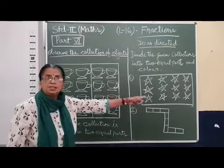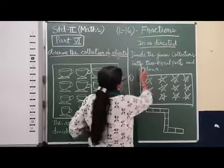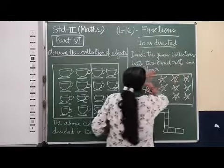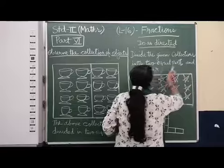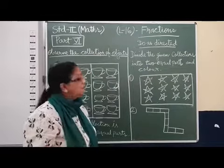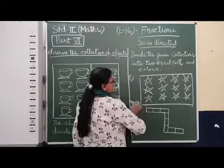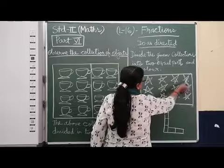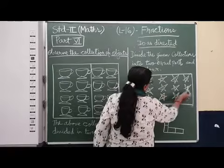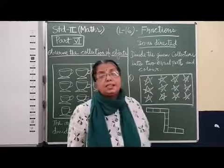Now we will do a certain exercise. What is given? Now we have to look at this directly. Divide the given collections into two equal parts and color. Now here we have to first count how many objects are given. You can see this box. Many stars are there. One, two, three, four, five, six, seven, eight, nine, ten, eleven, twelve. Twelve stars are there.